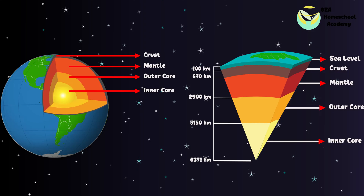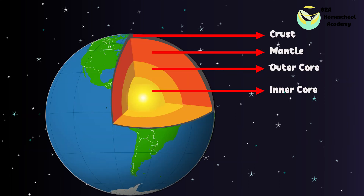The Earth is made of four basic layers: a solid crust, a hot nearly solid mantle, a liquid outer core, and a solid inner core. The crust is the part of the Earth we live and walk on. This is a solid layer that holds the land and the oceans.